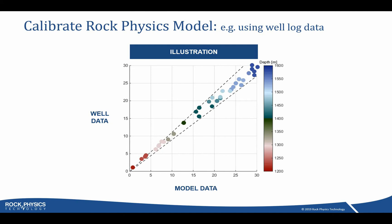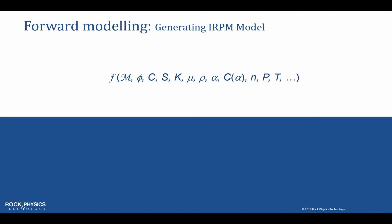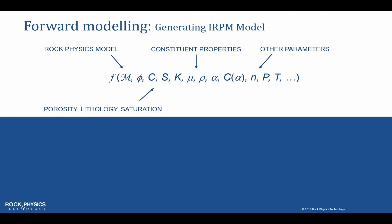So where does this rock physics model come from? You can calibrate the rock physics model using well log data, with inputs from your geologist and your petrophysicist. A rock physics model takes a number of parameters as input: parameters describing constituent properties, pressure, temperature, cementation, and other properties specific to each rock physics model. These parameters are calibrated using well log information. In addition, there is of course the porosity, the lithology — for example volume fraction of shale in a sand-shale mixture — and the saturation.